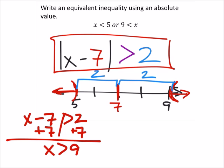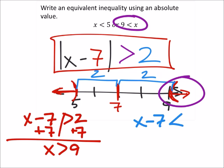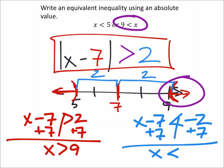Then I get x minus 7 is less than negative 2, which gives us this part of the graph, or this inequality here. And if I get x minus 7 is less than negative 2, I'll still add 7 to both sides, and I get x is less than, well, 5.